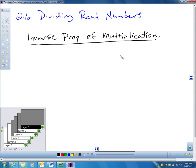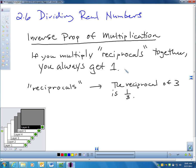It's called the Inverse Property of Multiplication. The Inverse Property of Multiplication basically says this: if you multiply reciprocals together, you always get 1. Now when you think of inverse, inverse has a relationship to the word reciprocal, which we'll get into. But just to show you this, that when you multiply reciprocals together you always get 1, let's look at the word reciprocals and what that means first.